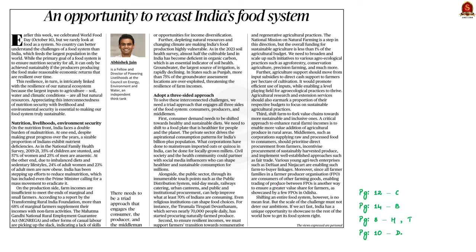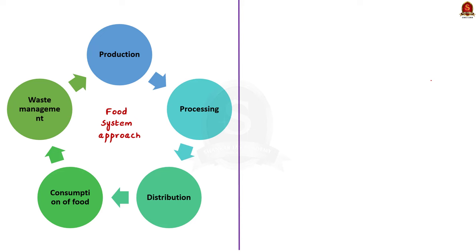Look at this editorial article about India's food system. It covers two aspects — the challenges faced by India's food system and steps that can be taken to address these challenges. What is a food system? In the food system approach, the entire chain is taken into account — production, processing, distribution, and consumption of food — including food wastage management. It focuses on the need for coordination among various stakeholders including farmers, food processors, retailers, policy makers, and consumers, aiming to ensure sustainability and efficiency of the entire food system.